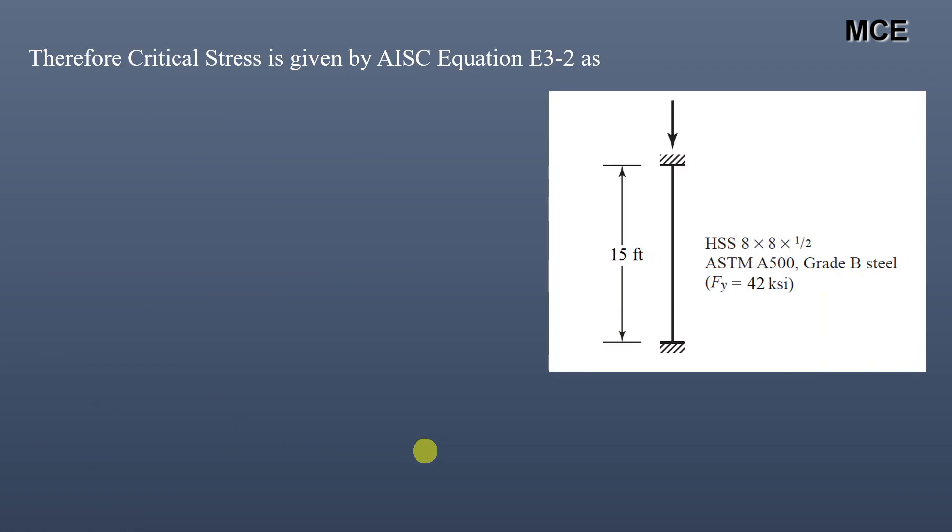Fcr is equal to 0.658 raised to the power Fy divided by Fe, times Fy. Putting values of Fy and Fe, we get the value of critical stress equal to 38.35 ksi.